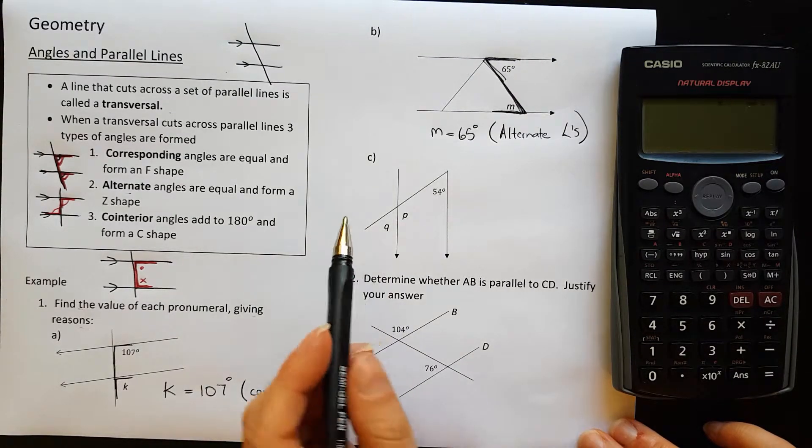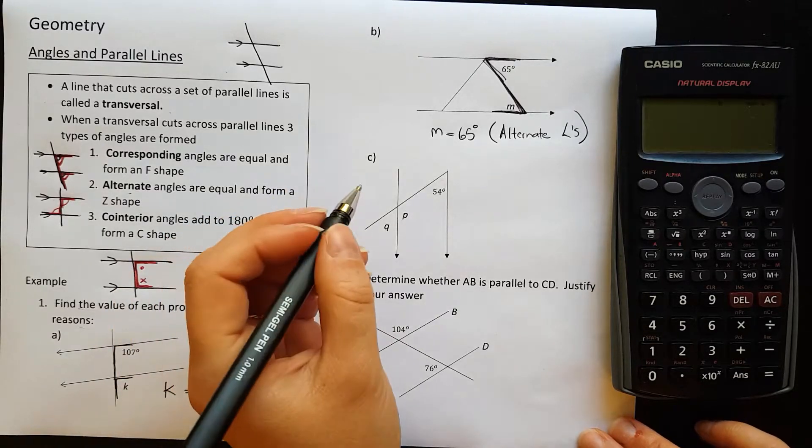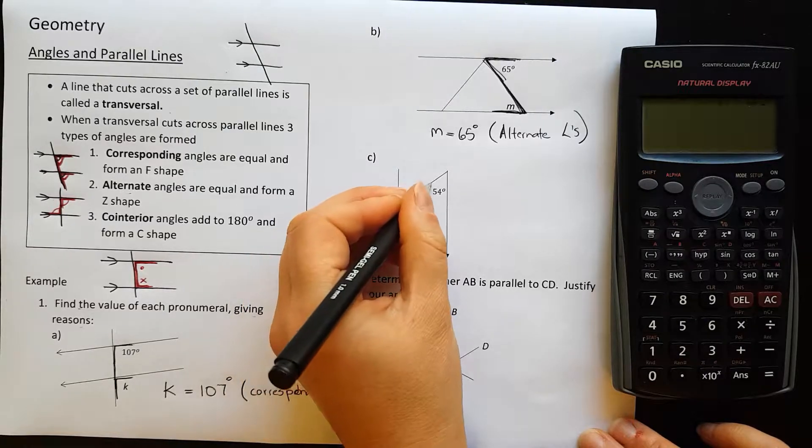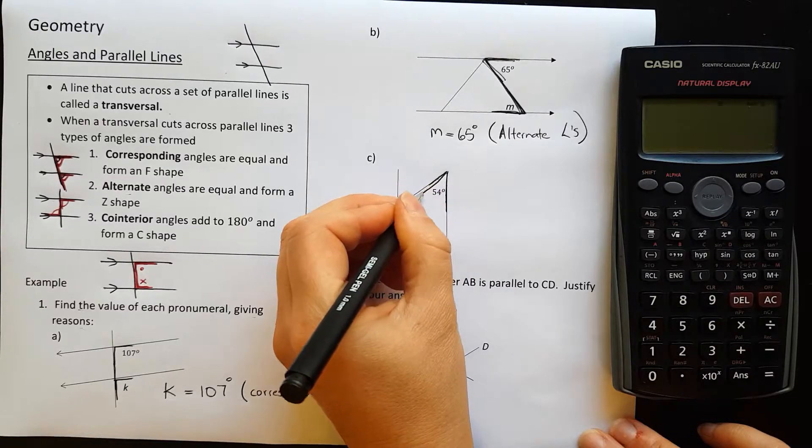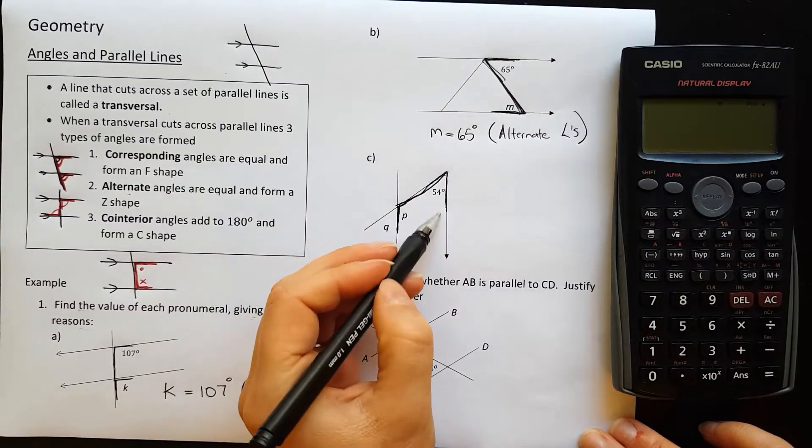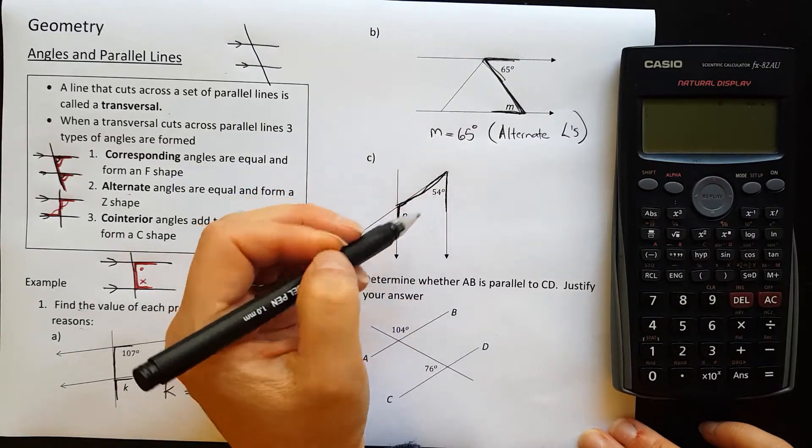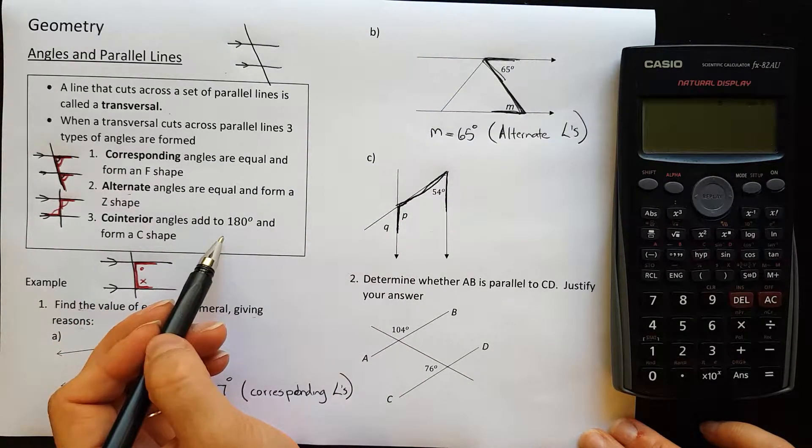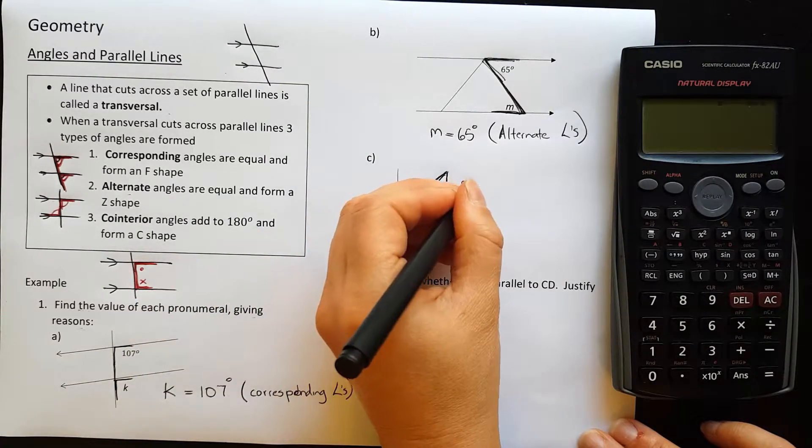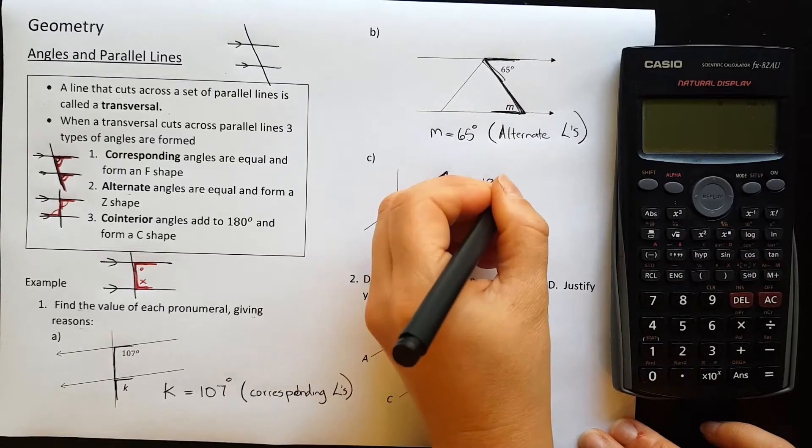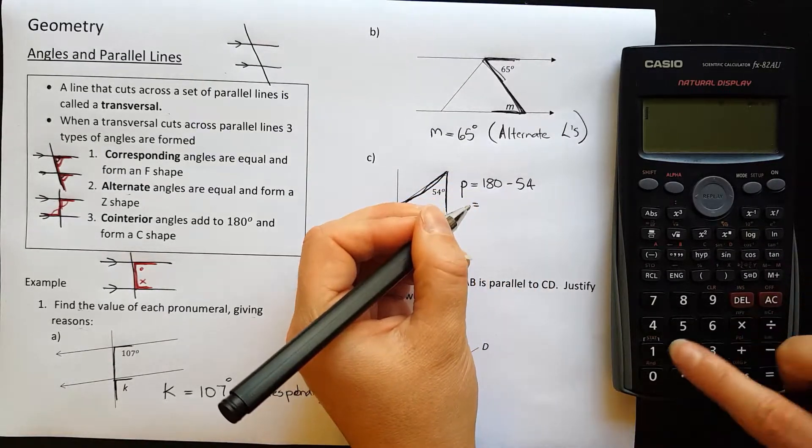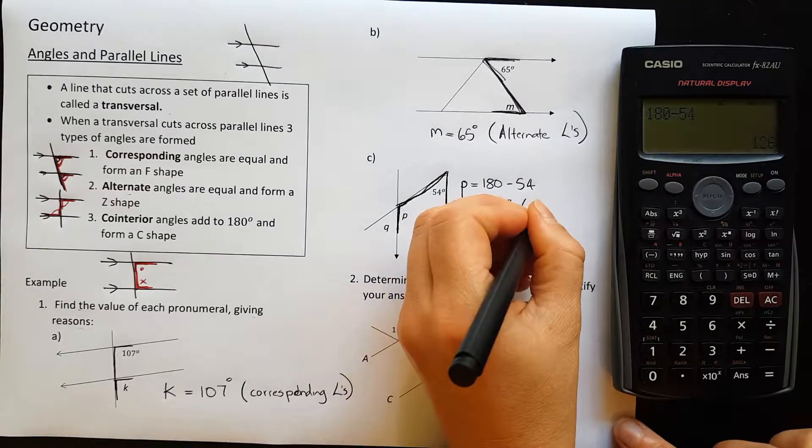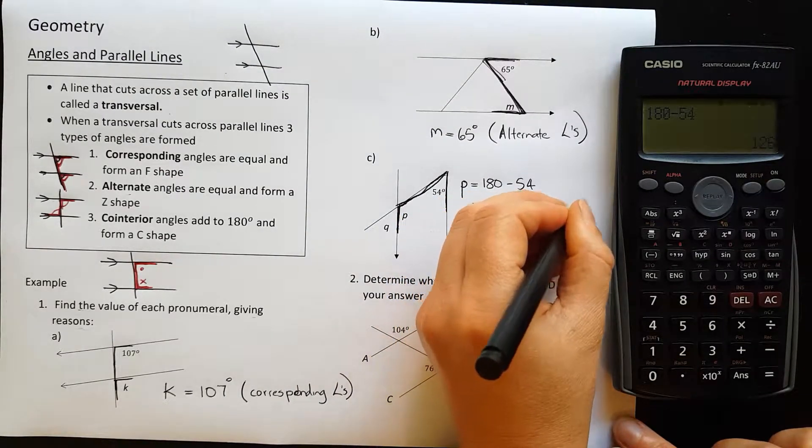Part C. We have two pronumerals here to find. Let's just do one at a time. Let's start with the P. So there's the arms for angle P and the 54 degrees. If we connect those up, they're both on the inside or they're making a downward C. If you think you rotate that around, it's a C shape, which means that it's co-interior and those angles add to 180 degrees. So to find P, P would be equal to 180 minus 54 degrees, which is 126 degrees. Writing the reason, co-interior angles.